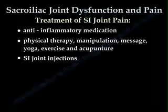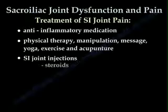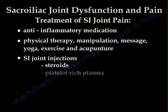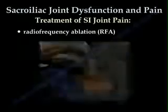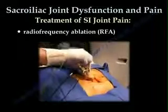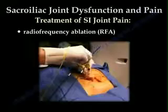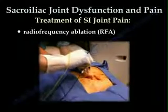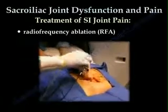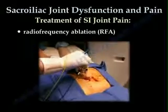SI joint injections can be diagnostic or therapeutic. Therapeutic injection methods include steroids, platelet-rich plasma, or prolotherapy. Radiofrequency ablation, or RFA, uses radio waves to produce heat directed at a specific nerve. The nerves generating the pain are relieved by this procedure.